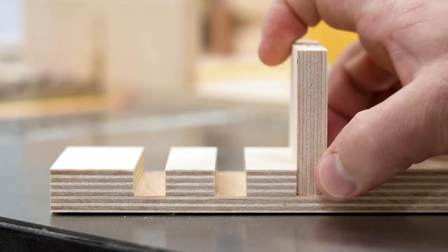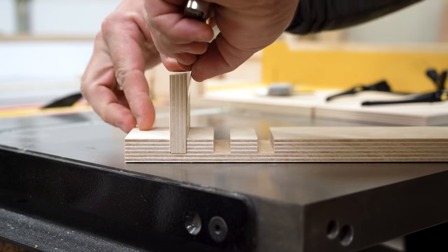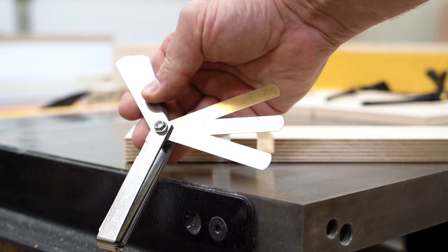Using feeler gauges to measure the gaps, they're between eight and ten thousandths wider than the material going into the dado. A bit too wide for decent dados.